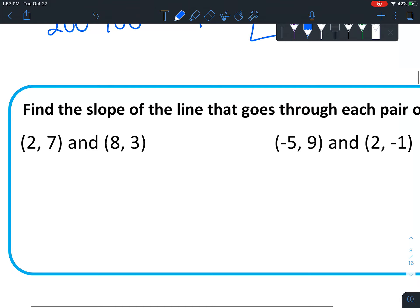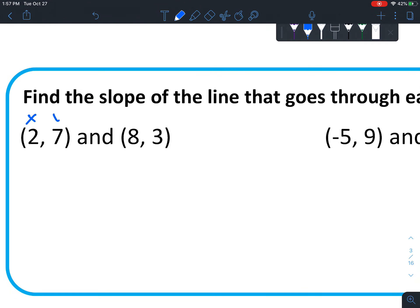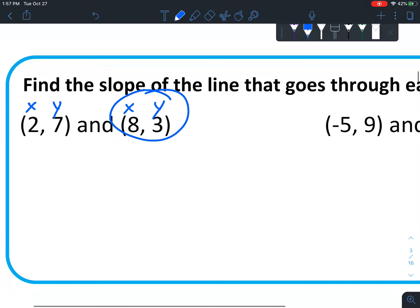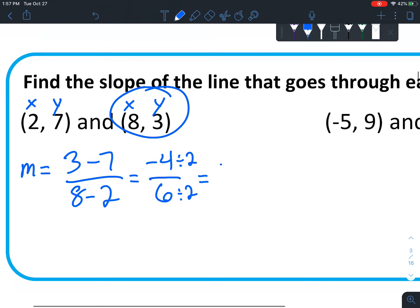So find the slope of the line that goes through each pair of points. So just remember x, y, x, y. Go ahead and choose which one you're starting with. Let's start with this one first. m equals, start with the y on top, 3 minus 7 over 8 minus 2. 3 minus 7 is negative 4. 8 minus 2 is positive 6. Now think for a second, if there's a number that will divide both of those. And there is. You can divide both of those by 2. So we get negative 2 over 3.